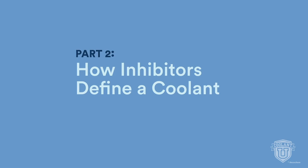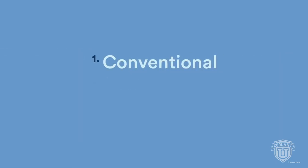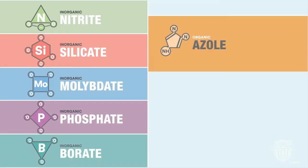There are three basic coolant technologies available on the market today: Conventional, OAT, and Hybrid. Each of them are defined by the corrosion inhibitor packages they use. In general, these fall under one of two broad categories: inorganic additives or organic additives.